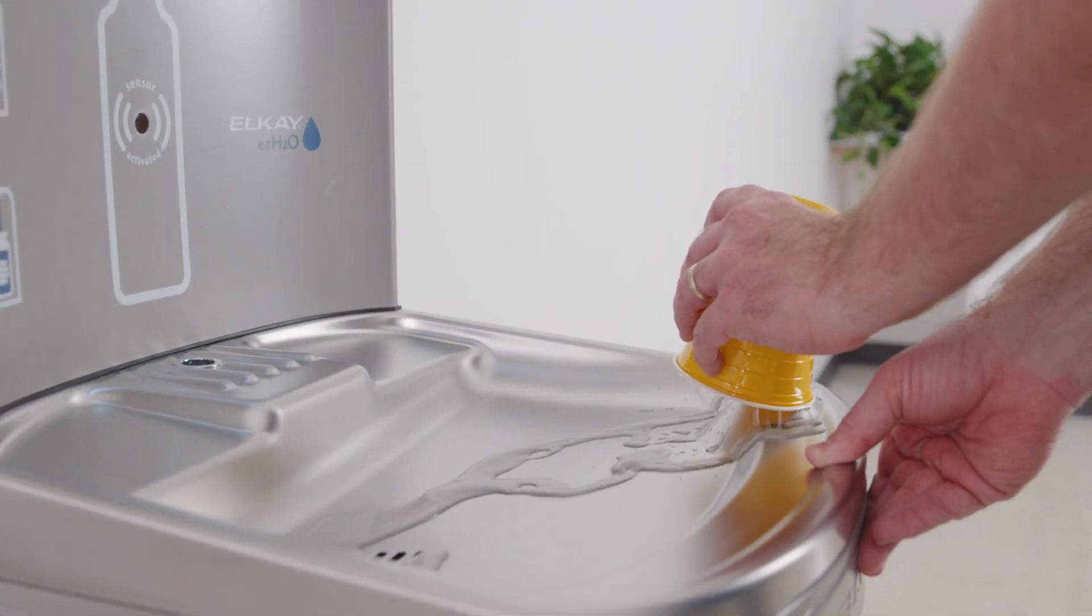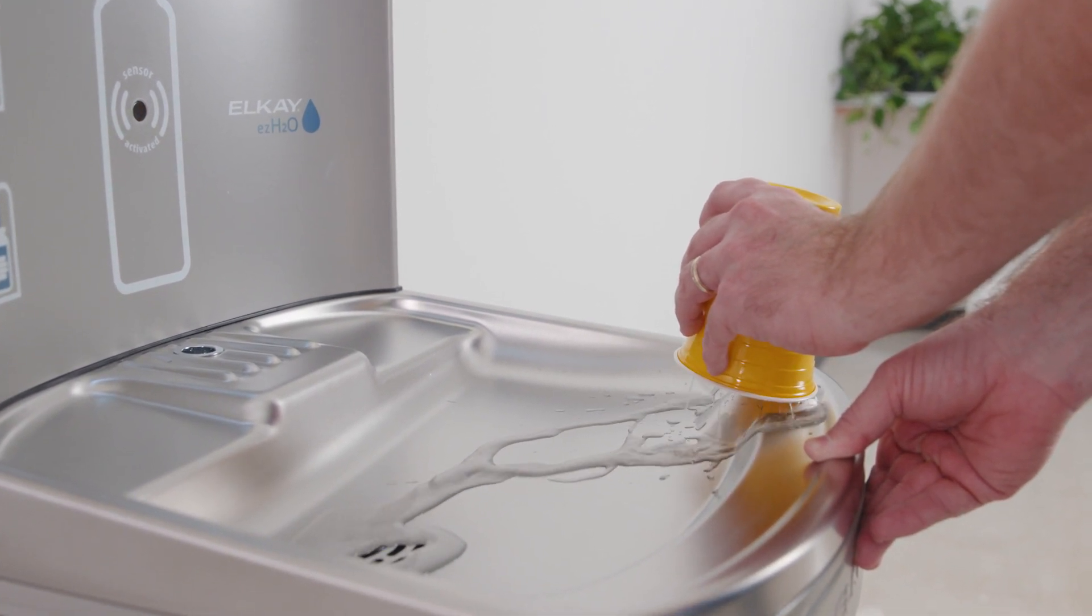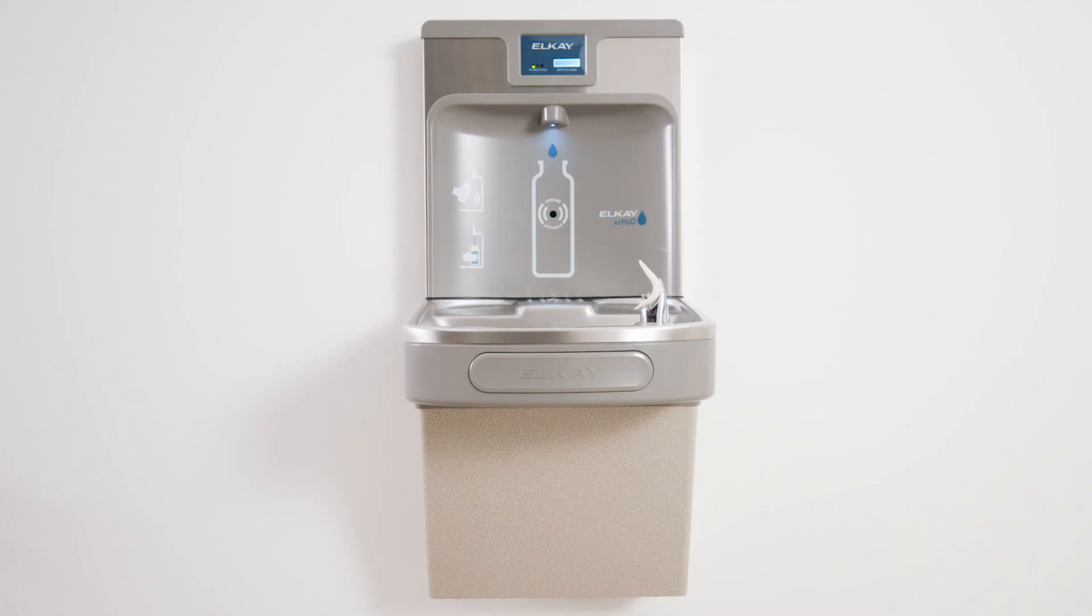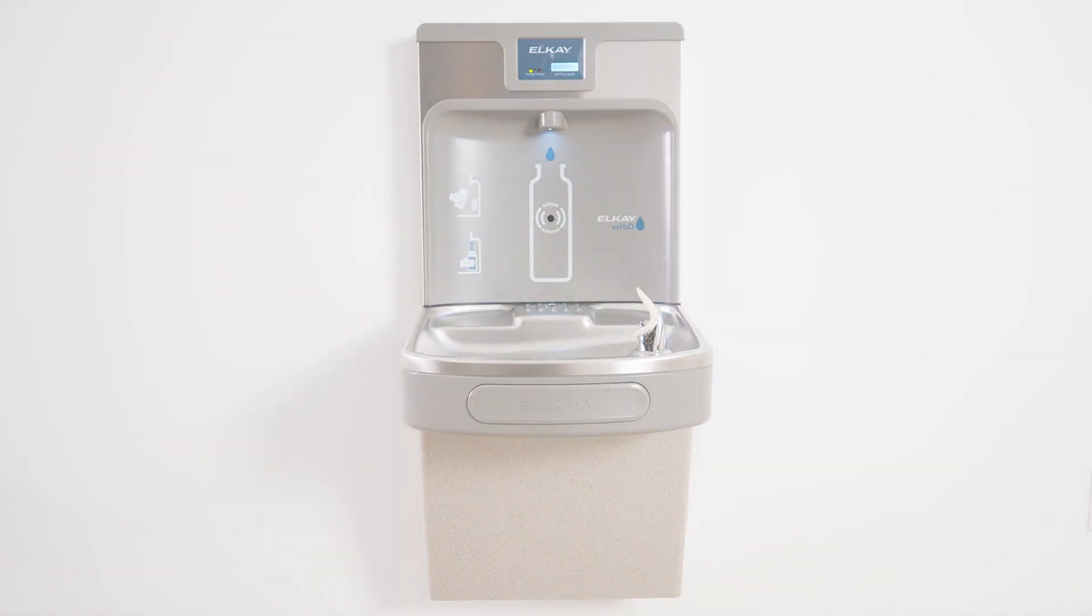Repeat this step for all dispensing points, like both sides of a bi-level unit or the bottle filler if the unit contains one. That's it! You've successfully replaced a micro switch on your LK EZ-H2O unit.